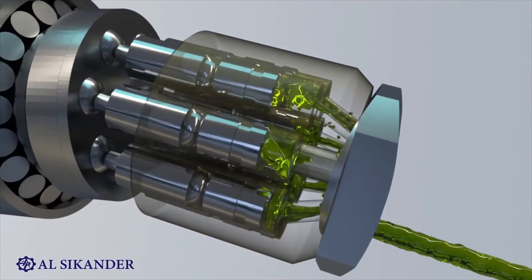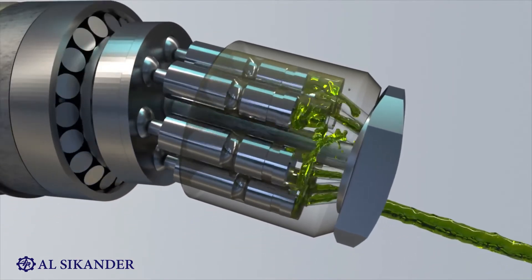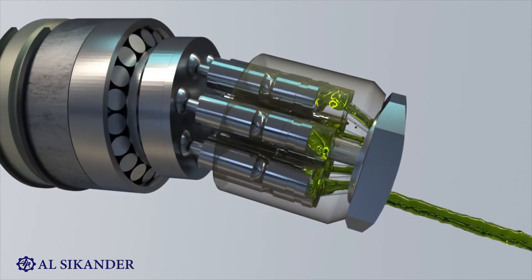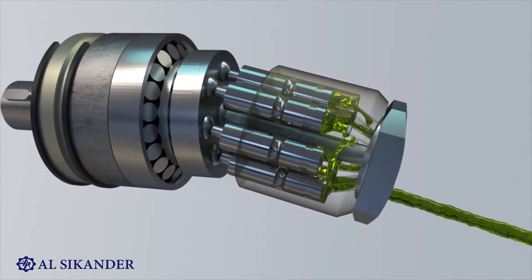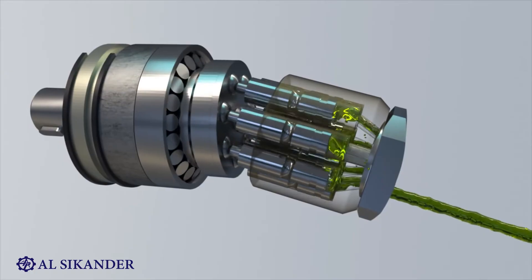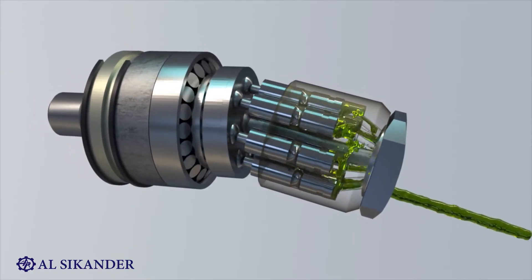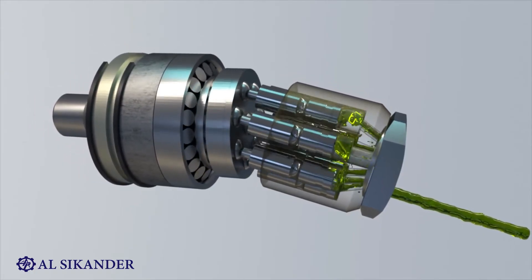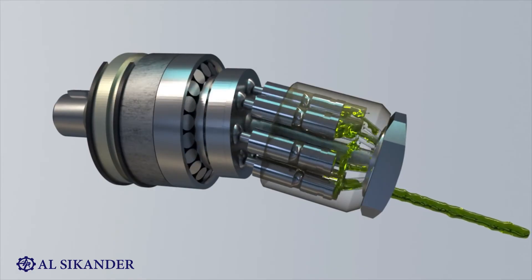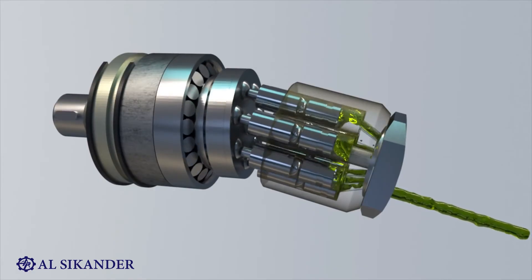Check valves are not needed in the presented pump, since the pistons always perform suction in one zone and discharge in another. Thus, axial piston pumps eliminate two significant disadvantages of conventional piston pumps: high pulsations and the influence of dynamic valve characteristics.